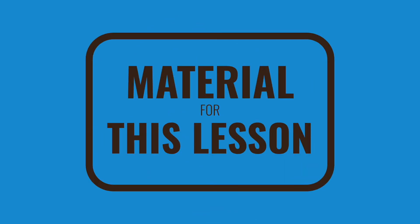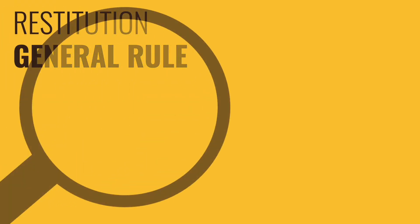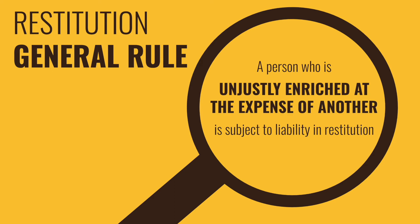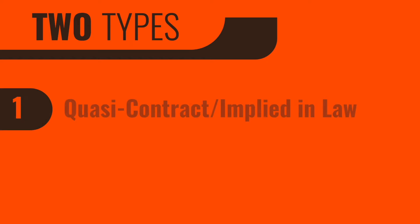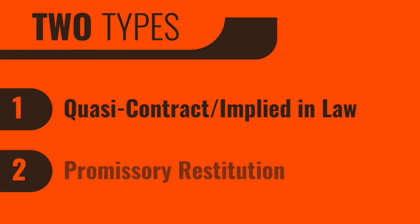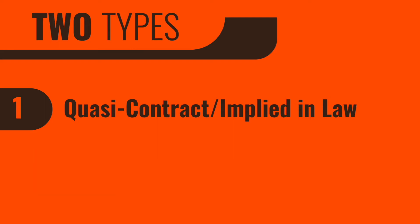The typical remedy is restitution: the money paid by the person who received the benefit, measured by the value of whatever goods or services were bestowed. Our general rule for restitution is that a person who is unjustly enriched at the expense of another is subject to liability in restitution. We're going to focus on two different types: quasi contract — also referred to as implied in law contract — and promissory restitution. These are quite different; one big difference is that promissory restitution, as the name suggests, requires a promise.